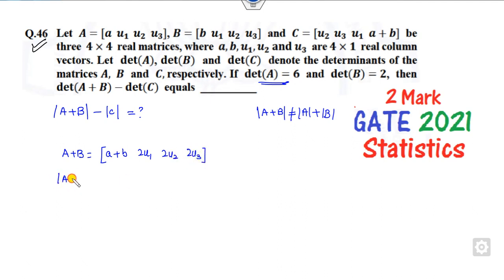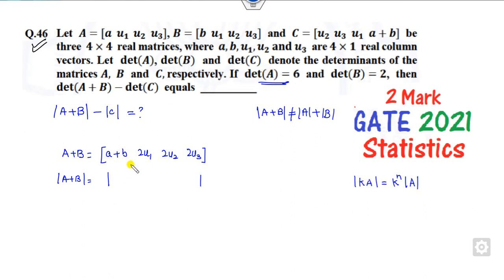If you find the determinant of A plus B, you can take 2 as a common factor. You know that det(kA) = k^n × det(A), where n is the order of the matrix. Since we factor out 2 from each of the three rows, that gives us 2³ = 8 times the determinant of the matrix [u1, u2, u3].